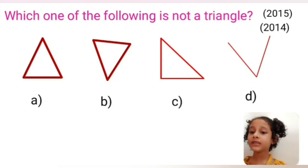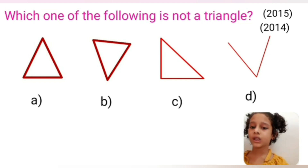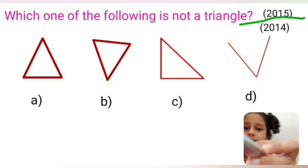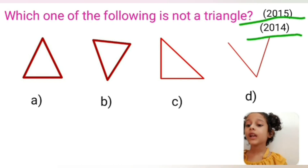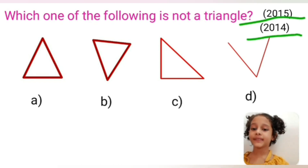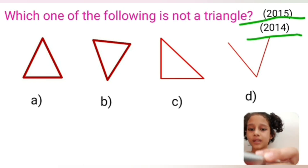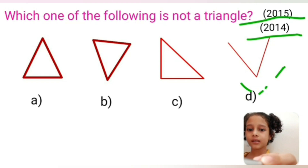Which one of the following is not a triangle? Options A, B, and C are all triangles. But option D — this is not a triangle. So option D is our correct option.